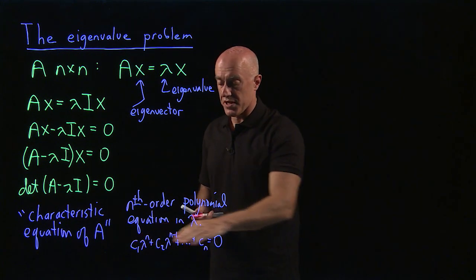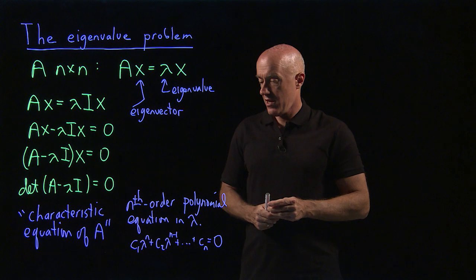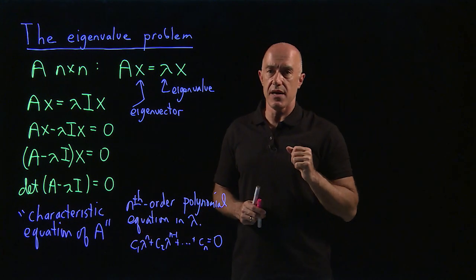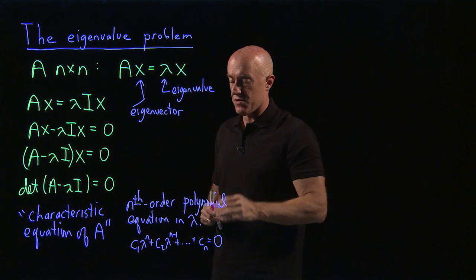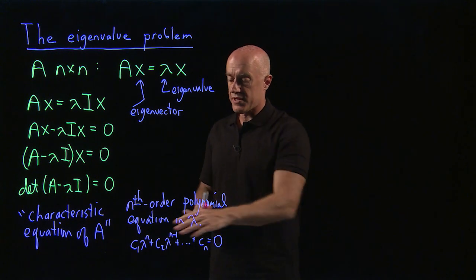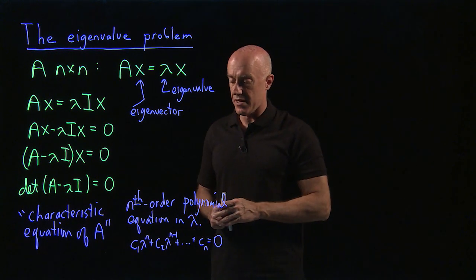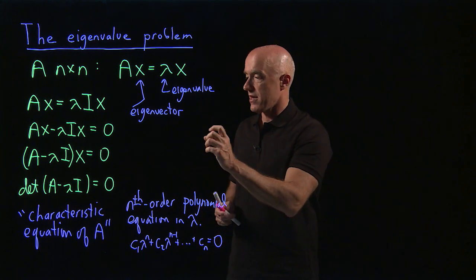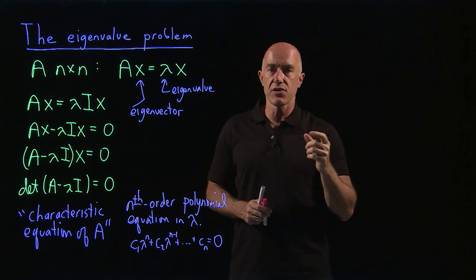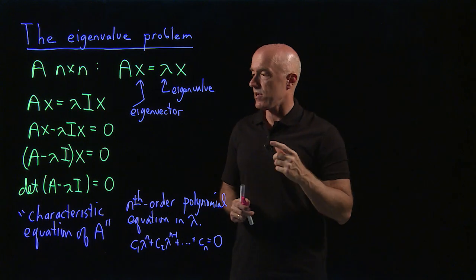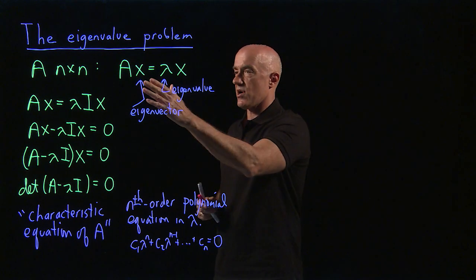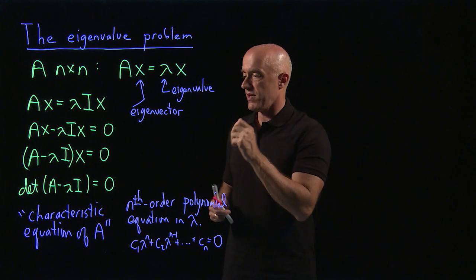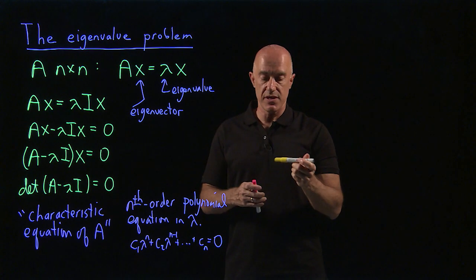These polynomial equations have roots — in fact n roots if you include the concept that roots can be repeated. The roots can be real or complex. In the rest of this lecture, I'll show you an example by considering a general 2 by 2 matrix and computing the eigenvalues of that matrix.